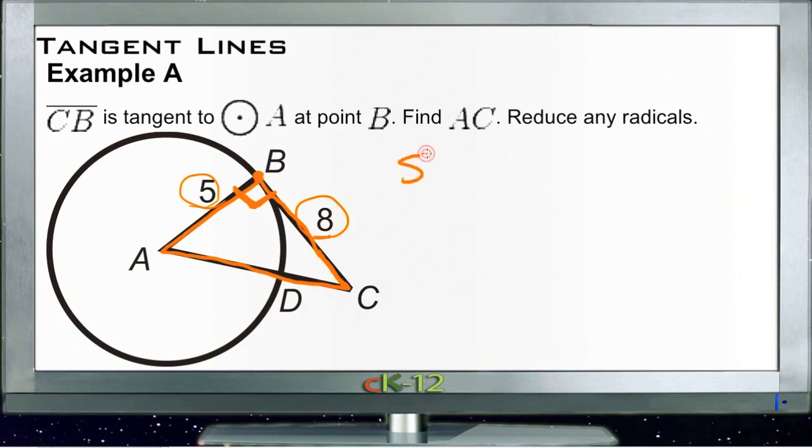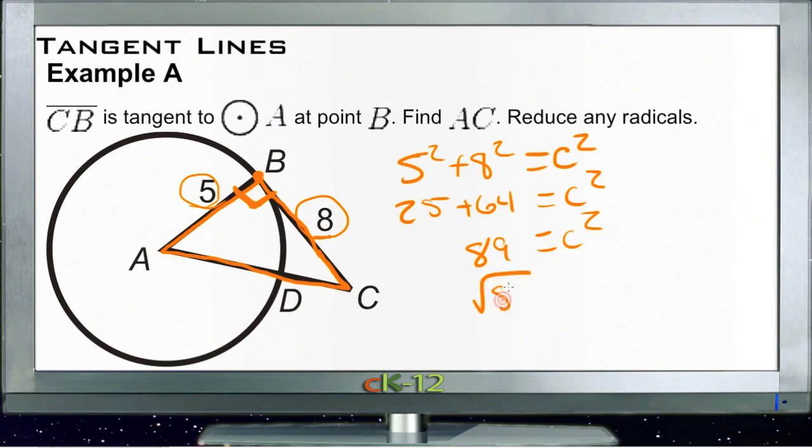So we have 5 squared plus 8 squared equals C squared. That gives us 25 plus 64 equals C squared, and 89 equals C squared. So the square root of 89 would be equal to side C, which of course our triangle here is represented by line segment AC. So square root of 89 would be the length we're looking for.